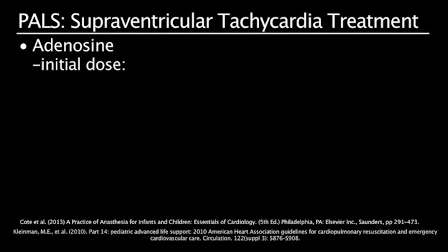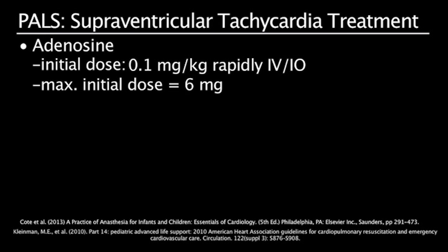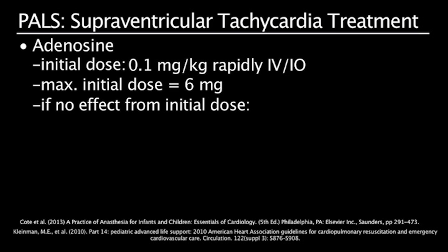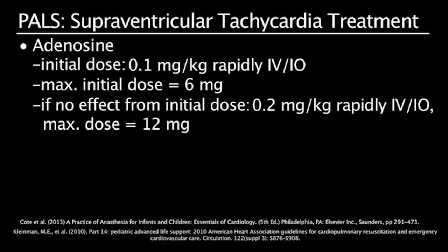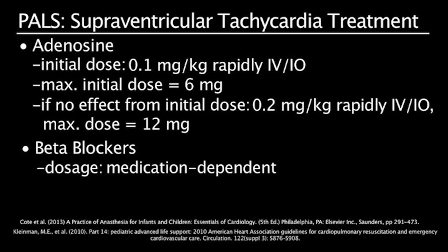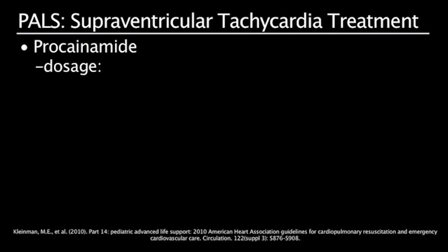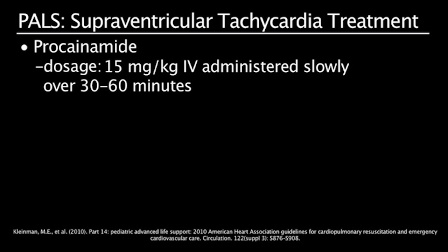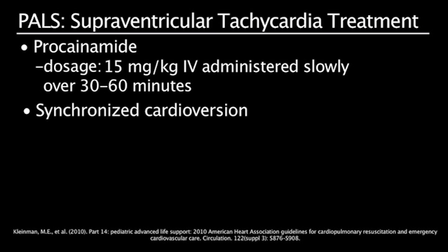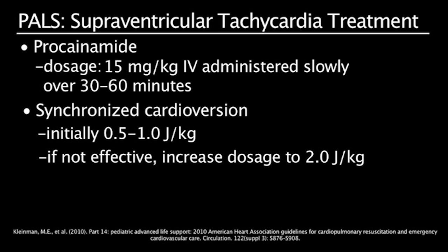The general dose of adenosine is initially 0.1 milligram per kilogram rapidly IV or IO, with a maximum dose of 6 milligrams. If there is no effect, 0.2 milligrams per kilogram can be given rapidly IV or IO, with a maximum dose of 12 milligrams. The dosage for beta blockers is dependent upon the specific medication administered. The pediatric dose for procainamide is 15 milligrams per kilogram IV, administered slowly over 30 to 60 minutes. Synchronized cardioversion is initially 0.5 to 1 joules per kilogram; if not effective, increase dosage to 2 joules per kilogram.